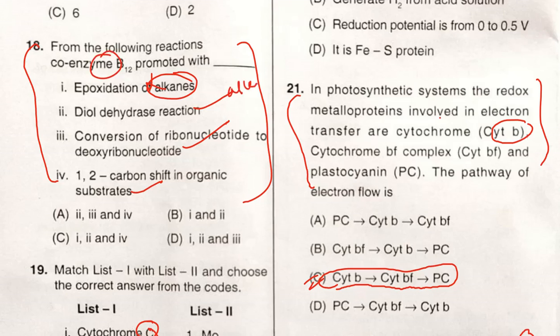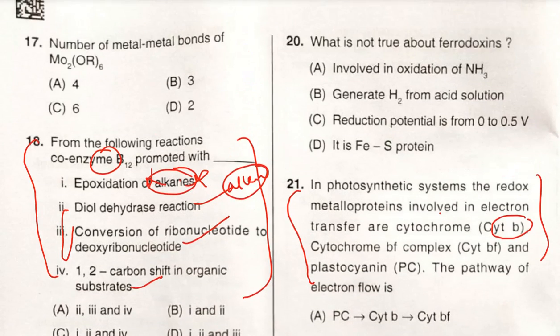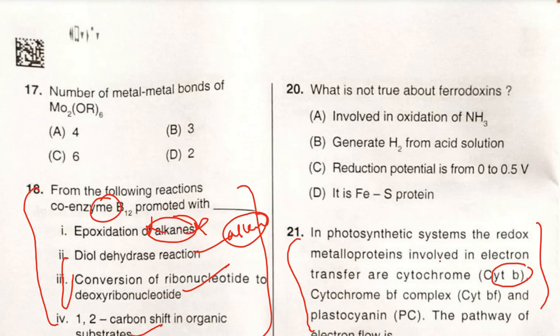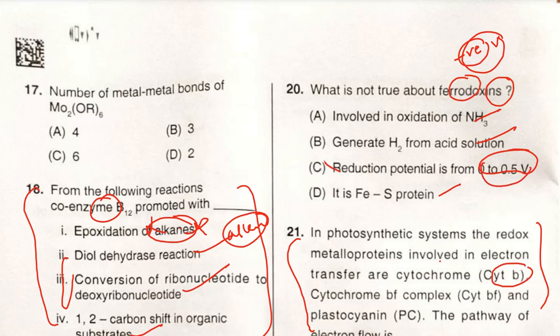What is not true about ferredoxins? Ferredoxin is involved in oxidation of ammonia - this is correct. It generates H₂ from acidic solution - correct. It is iron-sulfur protein - correct. But the reduction potential for ferredoxins will be in negative values, not 0 to 0.5 as given here. So we can expect option C is the correct answer.